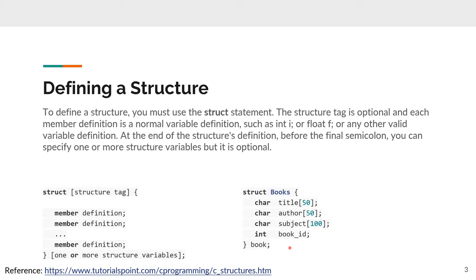This structure has a structure statement and the structure tag called 'books'. Within the structure, there are several types of variables: a character array called title, a character array called author and subject, and also an integer called book ID. After that, we give the variable called 'book', and based on such a variable we could invoke the defined structure.